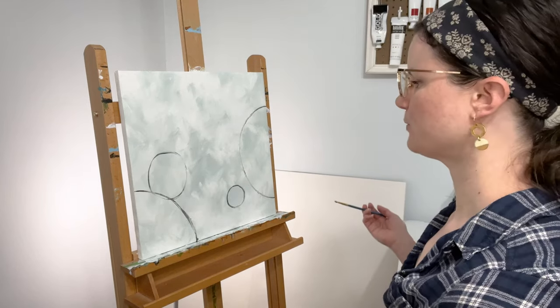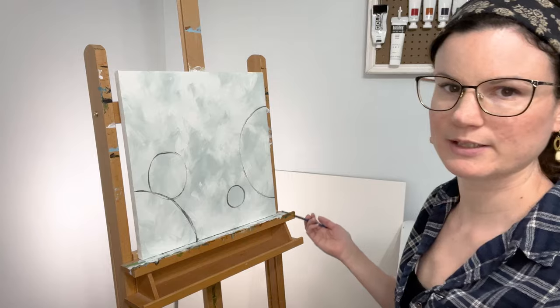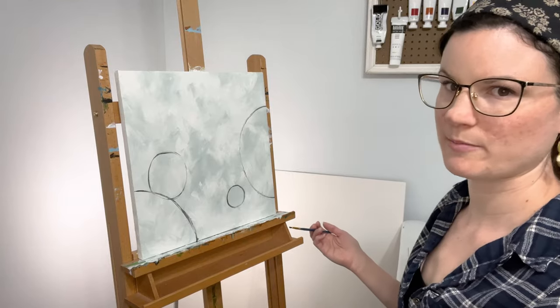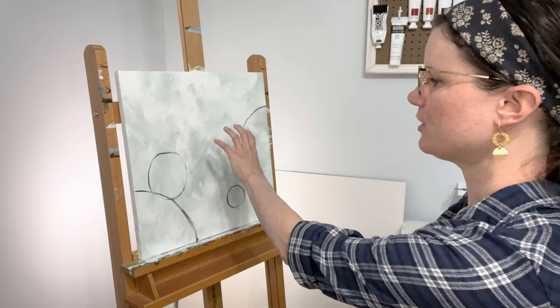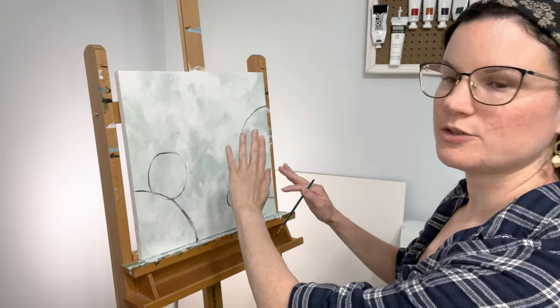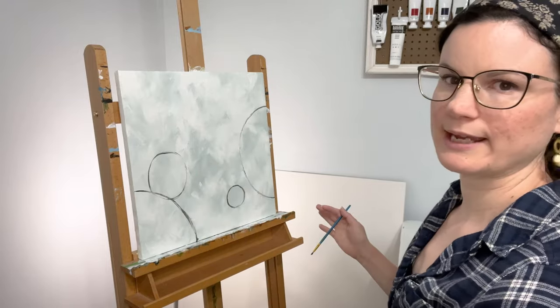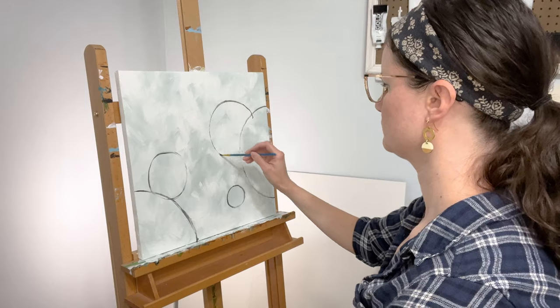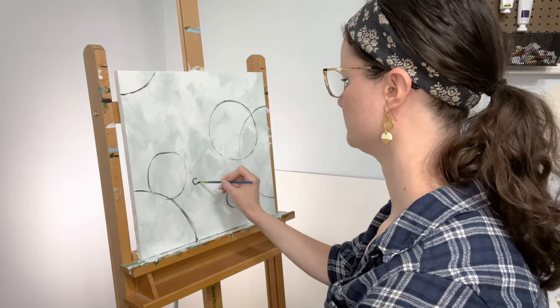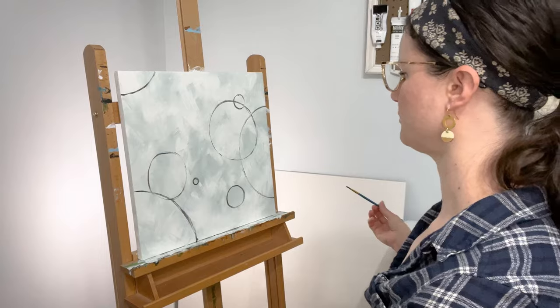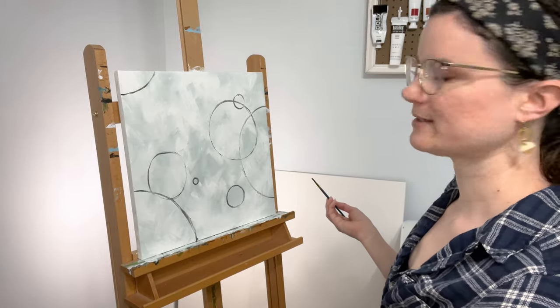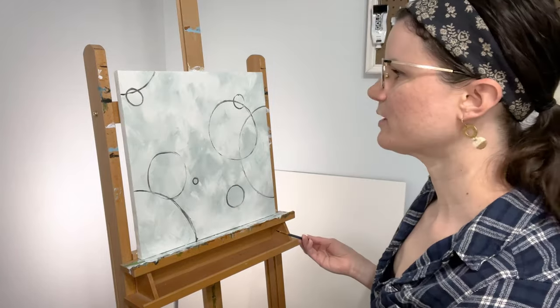So I want these to look random even though they're not completely random. I'm planning and thinking about where I'm putting them but I know I don't want anything in the center or I don't want it to be too symmetrical because then it looks too planned. I like having some overlapping and then some on their own. It makes it look a little bit more randomized. I like where it's going so far.